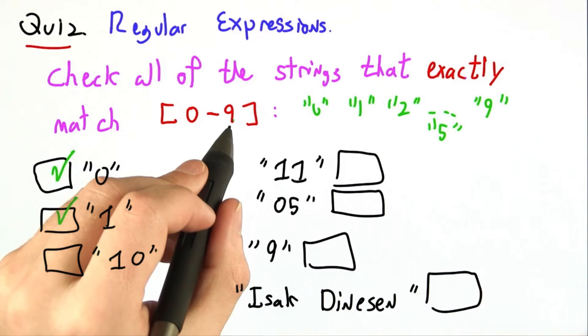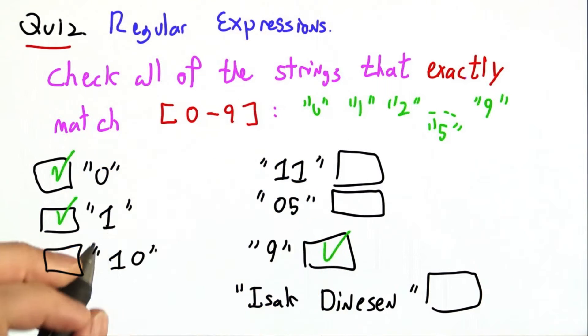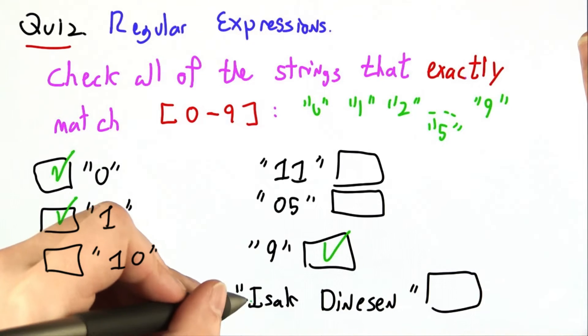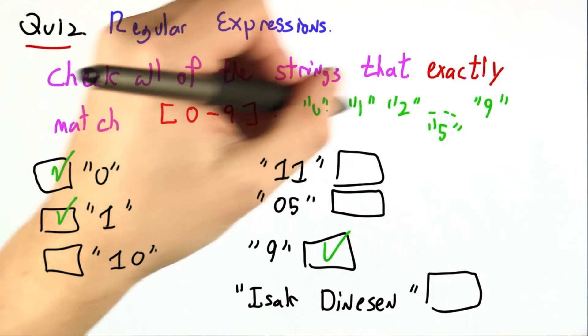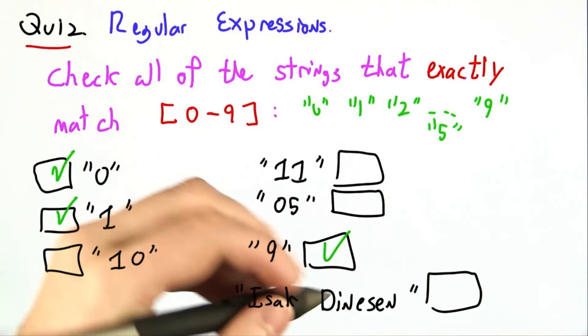And then 9, well, that's right on the border. We totally match it. Isaac Dennison, we don't match this for a number of reasons. First, it doesn't contain 0 through 9. And second, it's much too long.